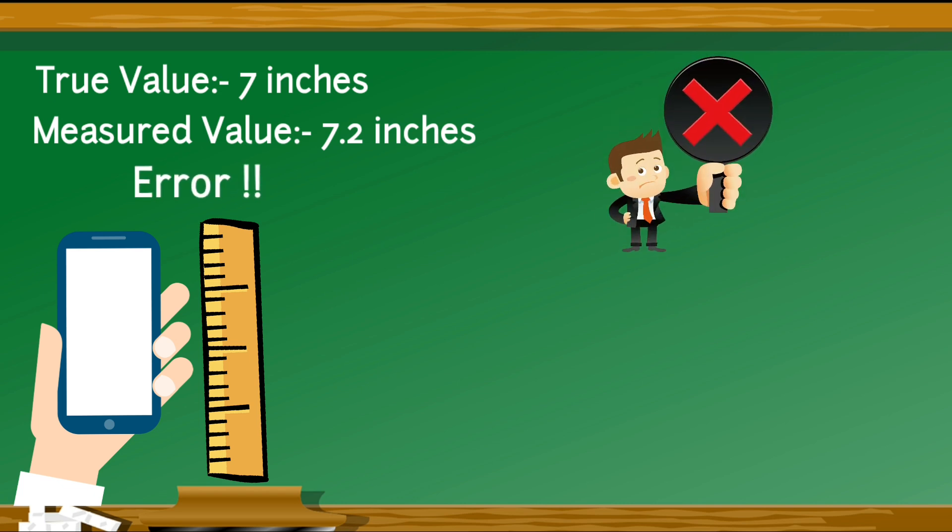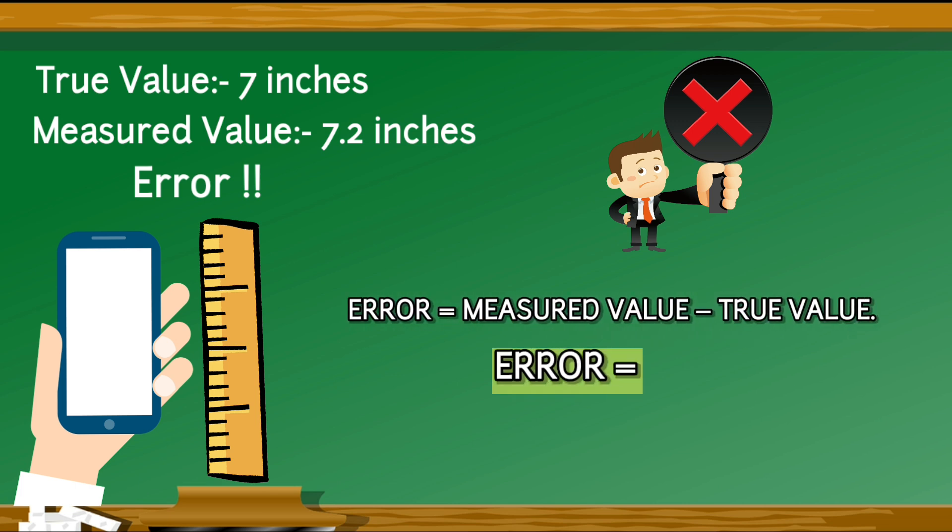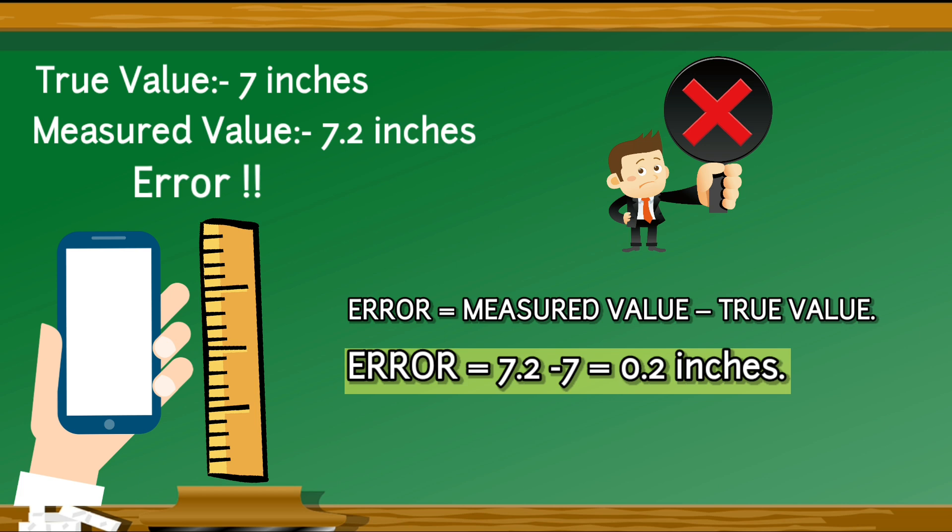This error is calculated by the given formula, that is, error equals measured value minus true value. That is, error equals 7.2 minus 7, equals 0.2 inches.